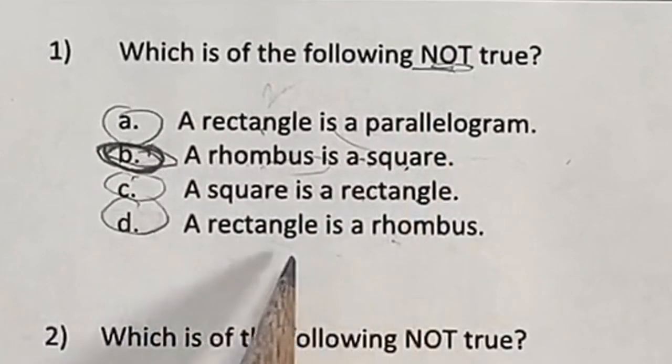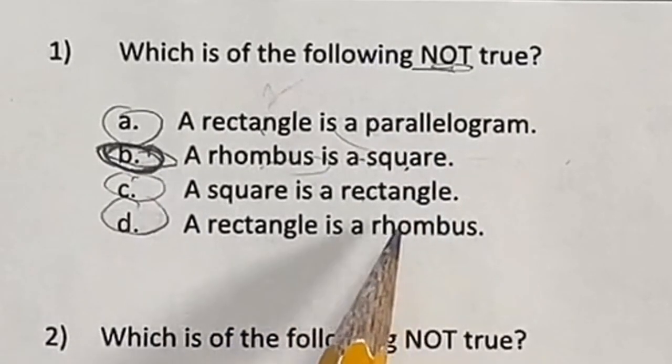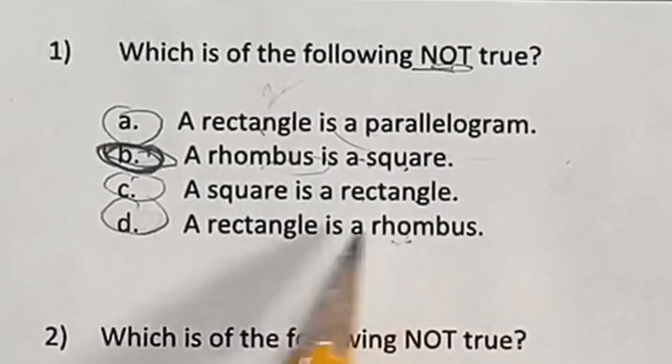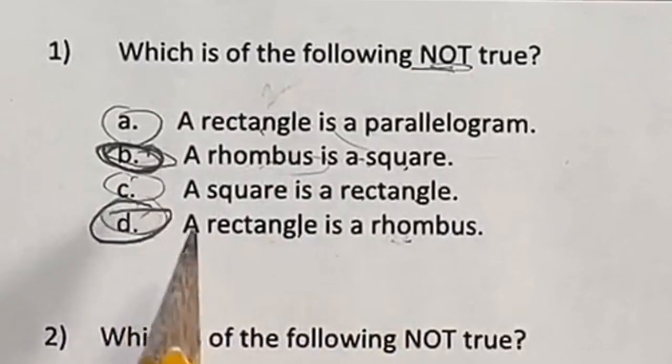a rectangle is a rhombus. Well, a rectangle has opposite sides that are equal, but a rhombus is supposed to have all four sides that are equal. So this actually is not true. So that means D could be an answer as well.